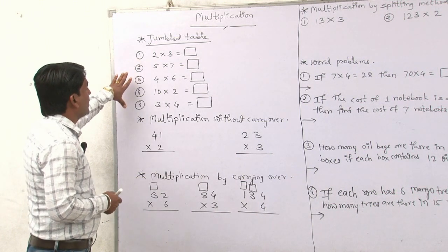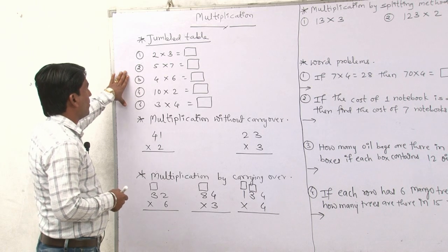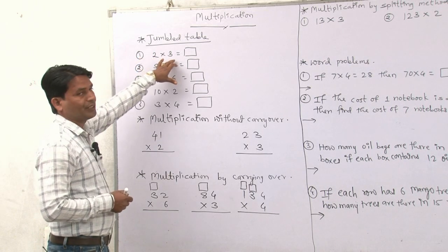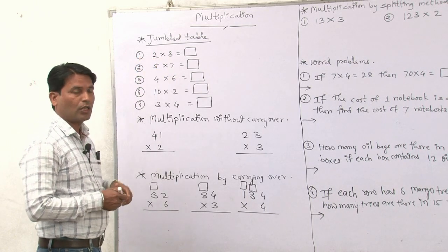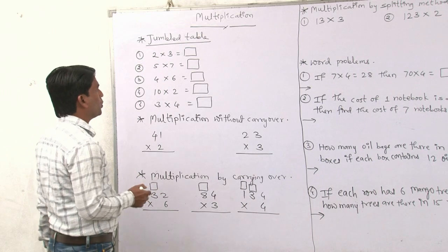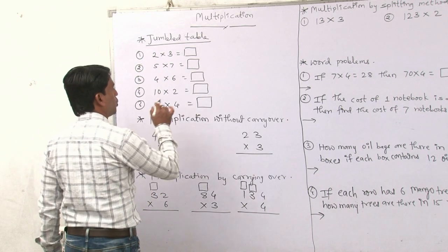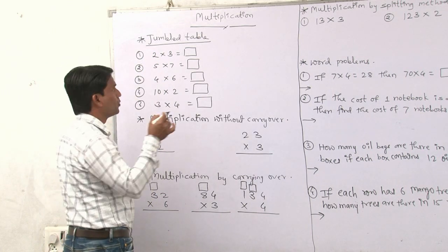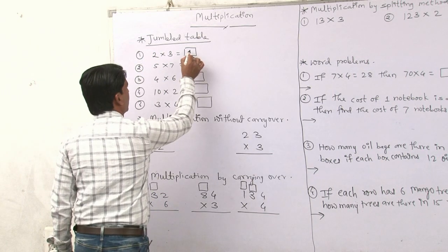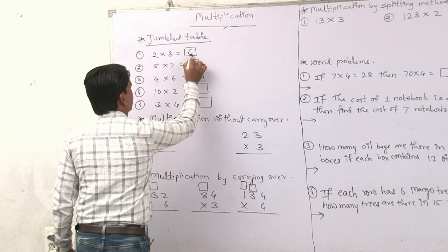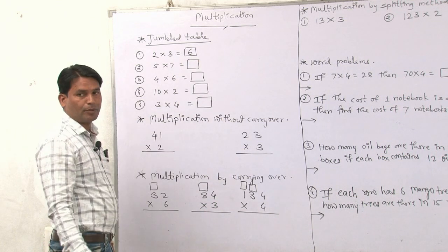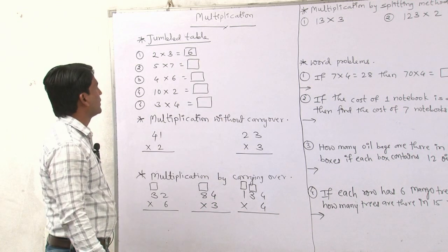Here are jumbled tables. Let us see the first one: 2 times 3. We know 2 ones are 2, 2 twos are 4, 2 threes are what? 6. So your answer will be 6.